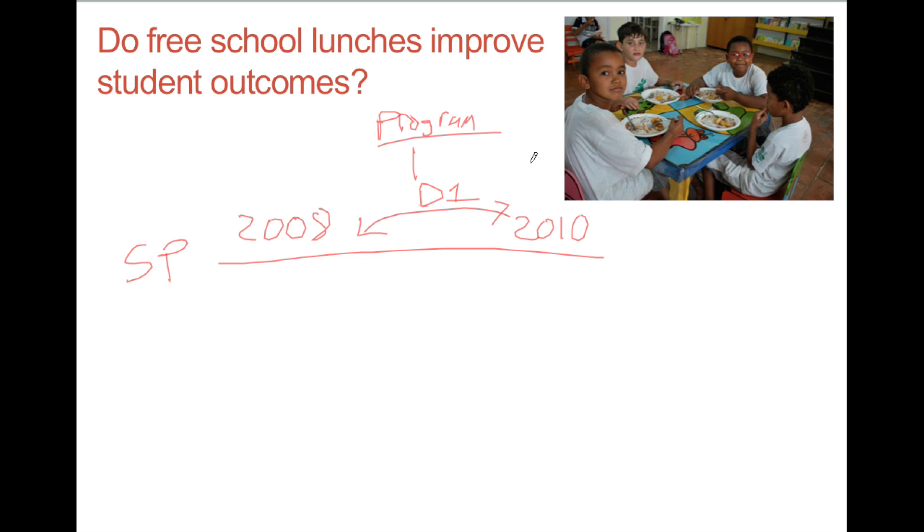D1 is certainly partially due to the program, but suppose there was an important international soccer tournament during the week of the exam in 2008, but not in 2010. This tournament might also influence the difference in the test scores between the two periods. So what we have is that D1 is both the program effects and what we're going to call the trend. What else might be happening at the same time.